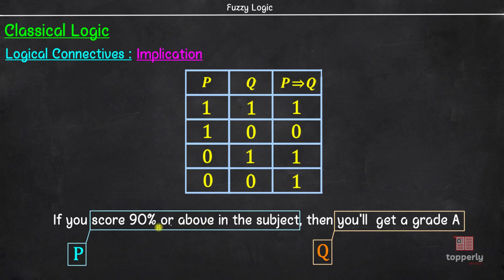Now consider the situation in which you do not score 90% or above in the subject. It is very important to note that this particular statement does not say what grade you would receive if you score less than 90%. So, for instance, if you scored 82% in the subject and end up with an A grade, you still cannot say that the promise is broken.